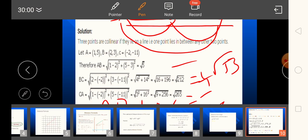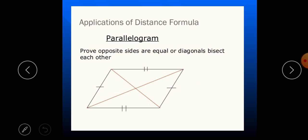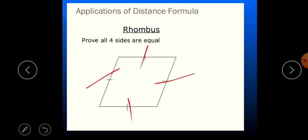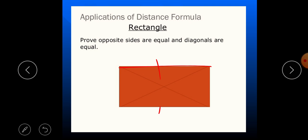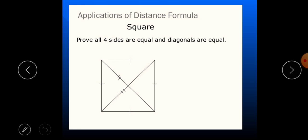Another application of the distance formula is to check what type of quadrilateral is formed. You should know the properties: a parallelogram has opposite sides equal but diagonals not equal; a rhombus has all sides equal but diagonals not equal; a rectangle has opposite sides equal and diagonals equal; a square has all sides equal and diagonals equal. To prove any of these, find all six distances: AB, BC, CD, DA, and diagonals AC and BD.